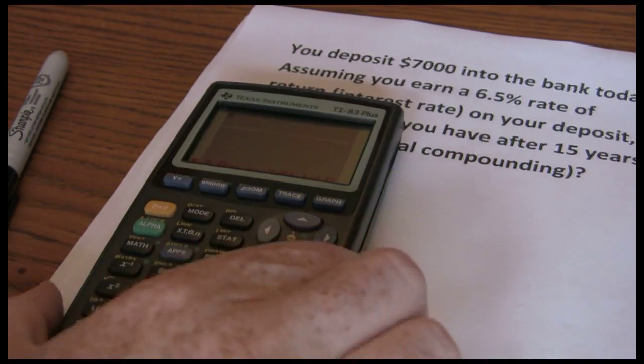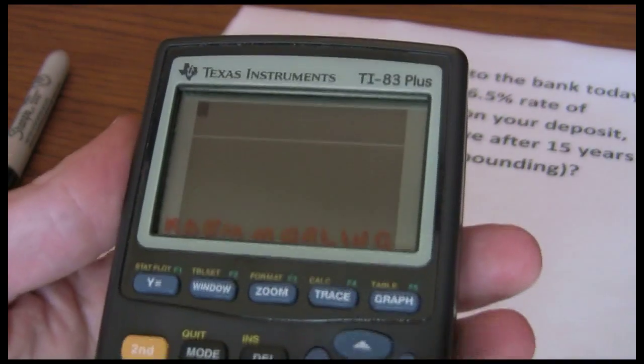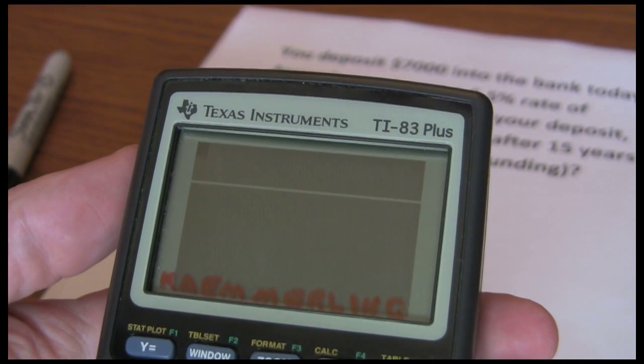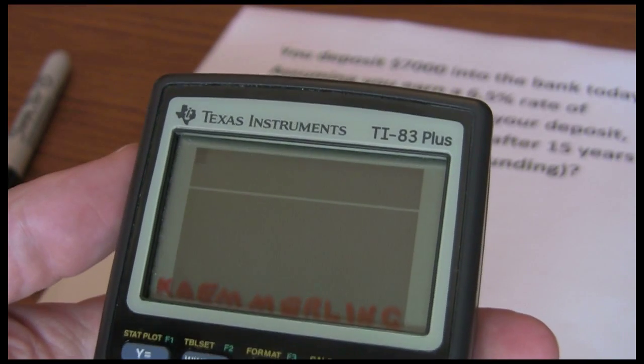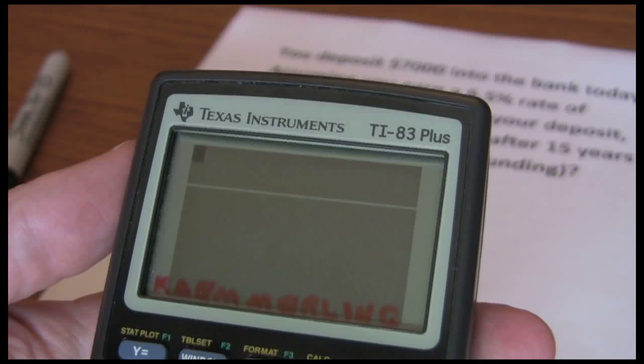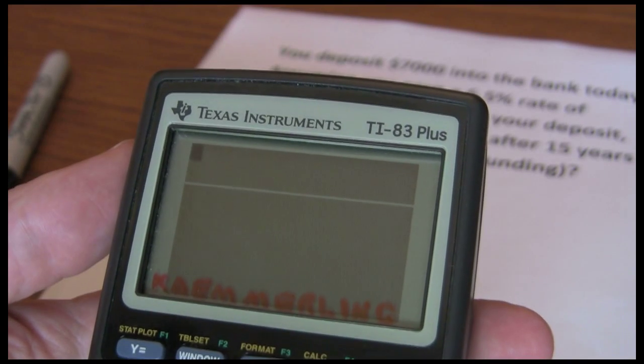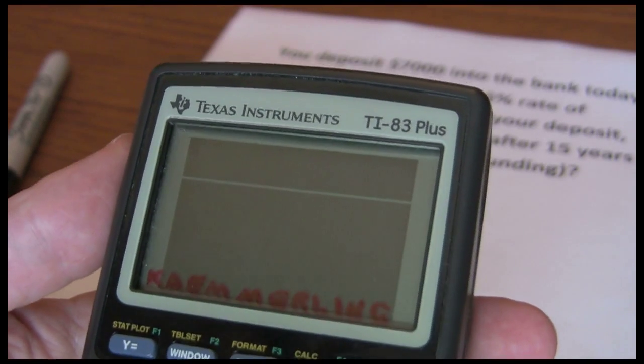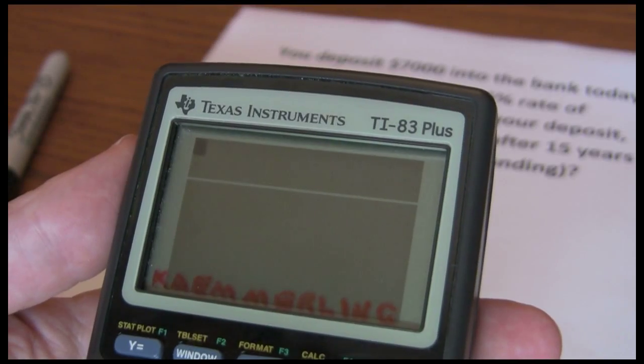We're going to be using the TI-83 Plus Financial Calculator to work through some basic time value of money problems using the five key approach. One thing I want to point out is TI-83 Plus and TI-84 work the same way from a finance perspective. So if you have a TI-84 you're going to be using the same procedure.